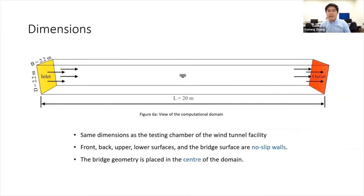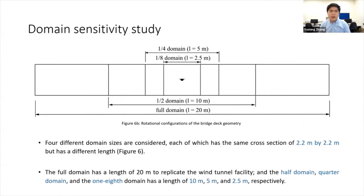The other four faces are defined as no-slip walls, and the bridge geometry is placed in the center of the domain, the surface of which is also considered as a no-slip wall. To determine the effect of domain size on numerical results, a domain sensitivity study was conducted with four different domain sizes, each having the same cross-section but different length: the full domain at 20 meters, and the half, quarter, and one-sixteenth domains at 10 meters, 5 meters, and 2.5 meters respectively.